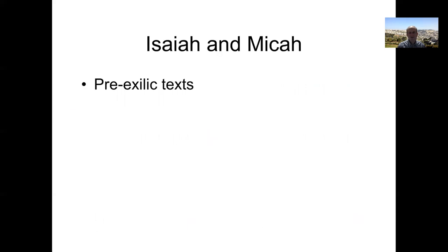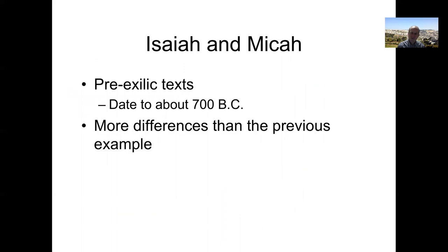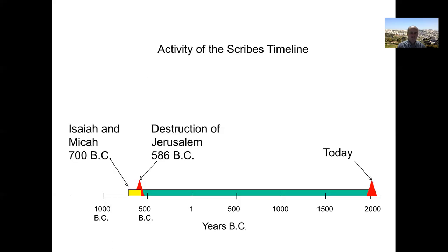These are pre-exilic texts — this is older, going back to about 700 BC. So with more differences than the previous examples, that gives us a little bit of a different picture. It shows that maybe before the exile, before the destruction of Jerusalem, they were a little bit more free as far as how they recorded and updated the text. Maybe they weren't quite as rigorous about doing letter-for-letter copying.